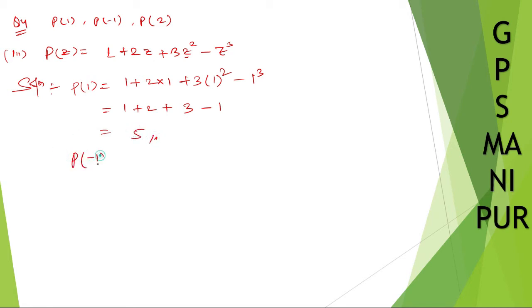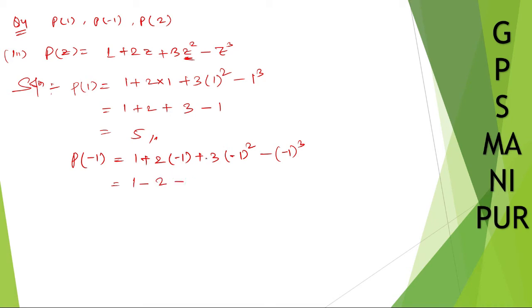So p of minus 1 — what will be p of minus 1? It is 1 plus 2 into minus 1 plus 3 into minus 1 whole squared, minus minus 1 whole cubed. That gives 1 minus 2 plus 3 into 1 — since minus 1 squared is plus 1 — minus into minus 1 cubed, which is minus 1, so that becomes plus 1. So 1 plus 3 is 4, minus 2 plus 2 cancel, only 3 remains. So the answer is 3.